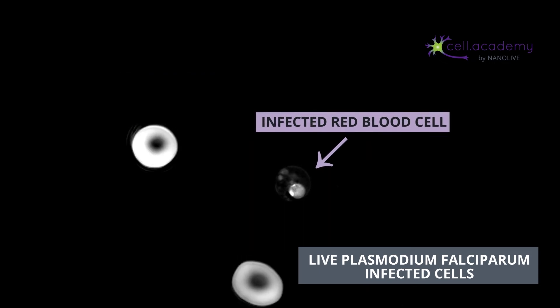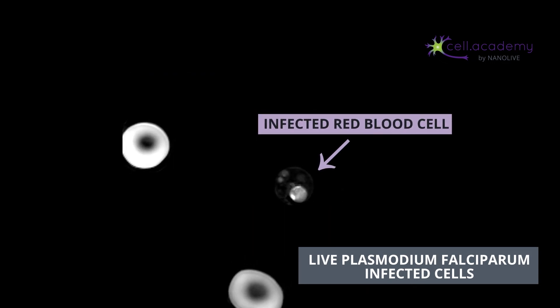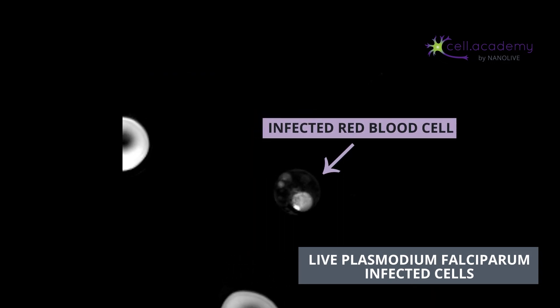Plasmodium feeds itself on the hemoglobin in host blood cells, which eventually die. As you have probably understood by now, the loss of red blood cells leads to extreme fatigue. So, as we have seen today, fatigue can be explained by many factors, but it usually comes down to alterations in red blood cells.